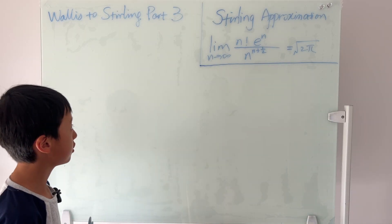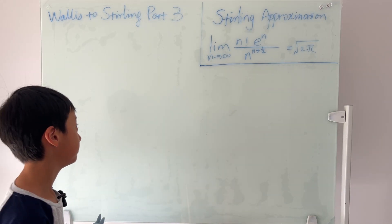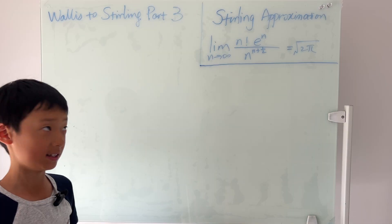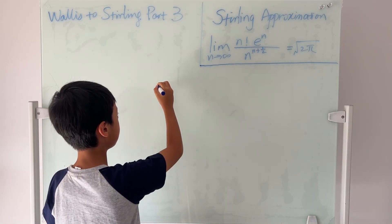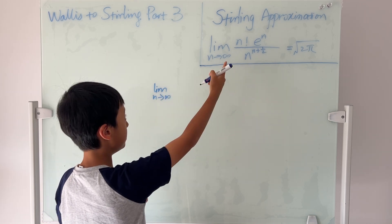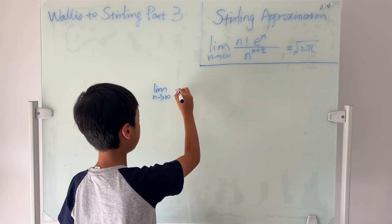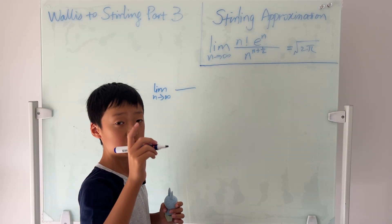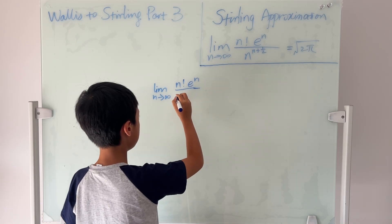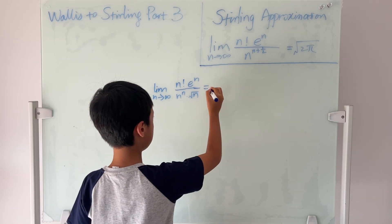Usually it's the Wallis formula, but this time it's the Stirling approximation, which is this. The Stirling approximation actually has many forms, one of which looks like this. So we can transform this Stirling into n to the power of n times n to the power of 1/2, which is the square root of n. The top stays the same, and the bottom is n to the power of n times the square root of n. And this is equal to the square root of 2π.